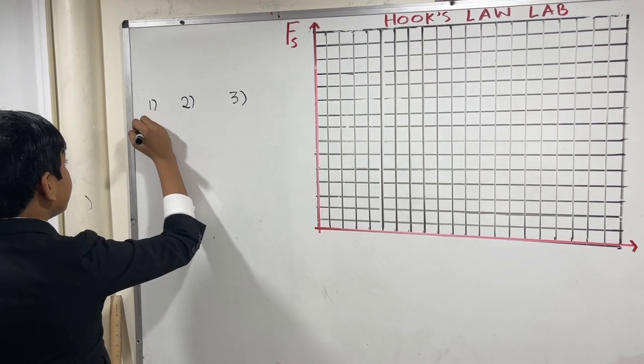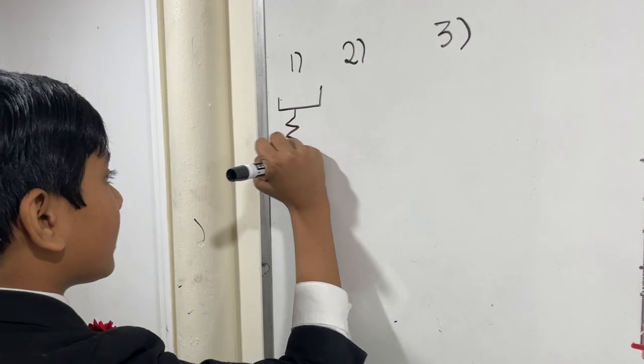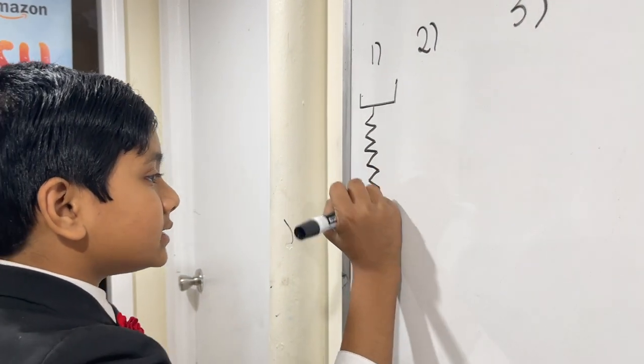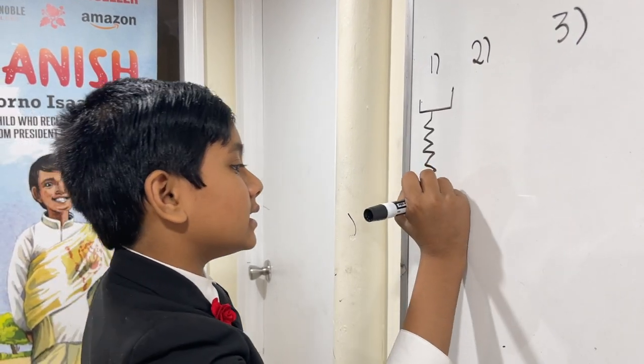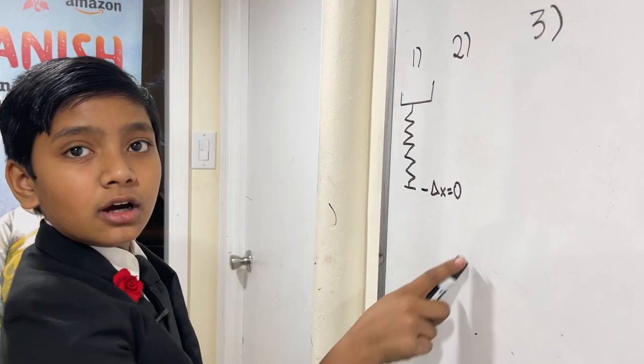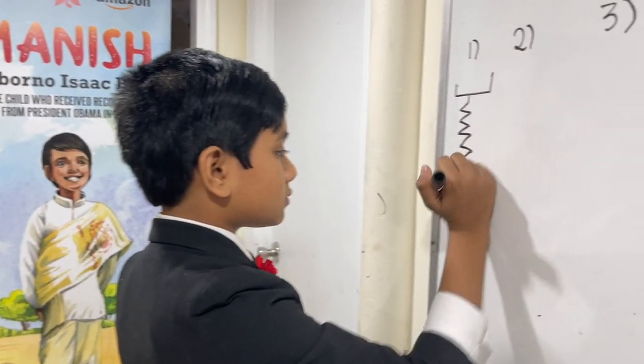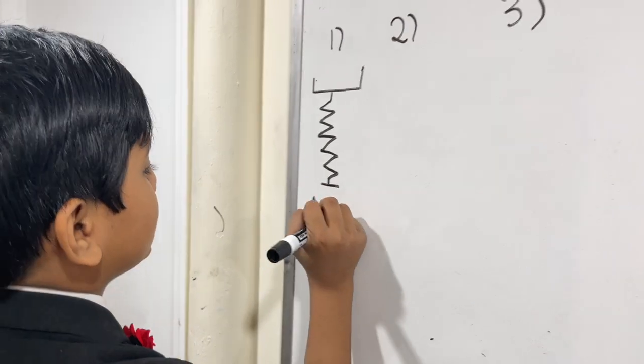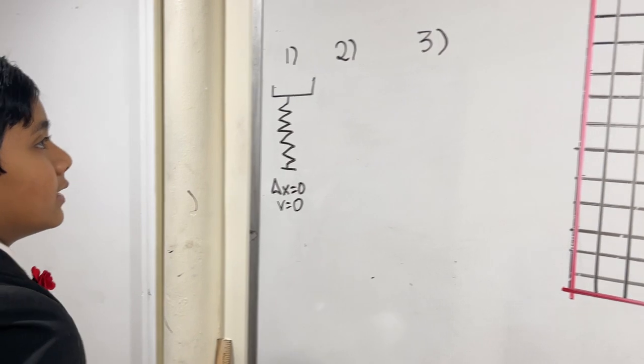Now, let's close the computer and put it away, because we're going to be doing our lab now. And we don't need the computer anymore. Before we begin with Hooke's Law, let me show you a spring, the same spring, in three different states: 1, 2, and 3.